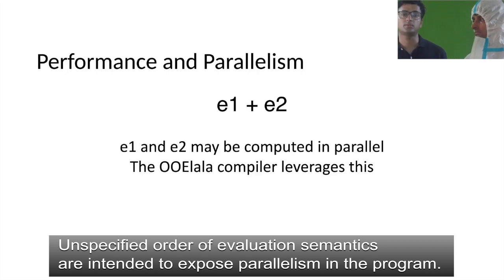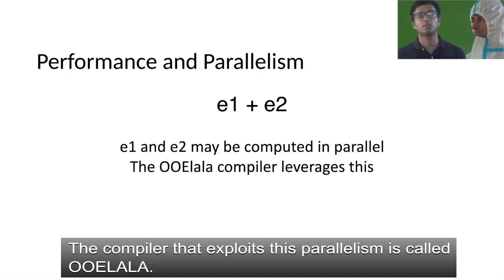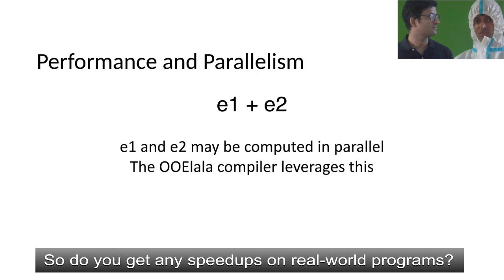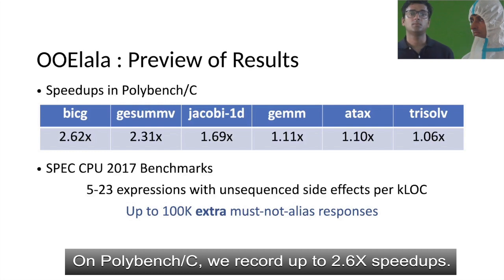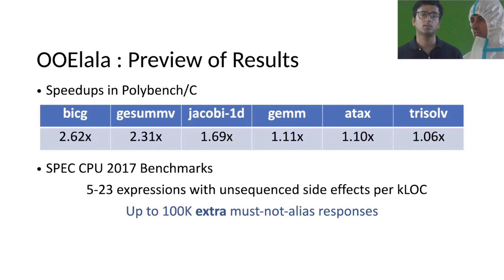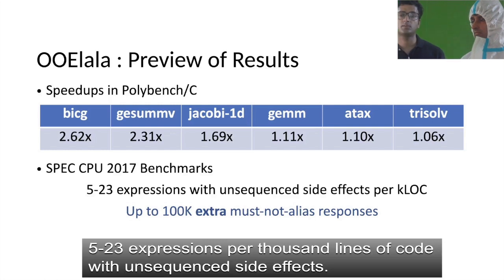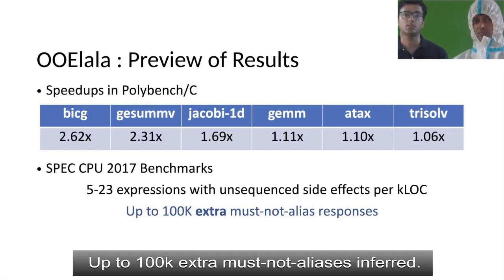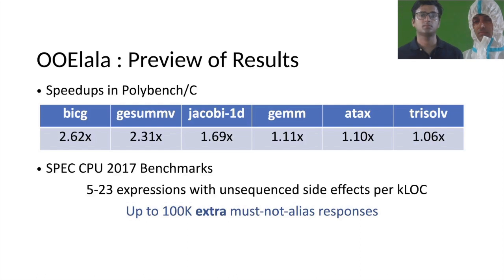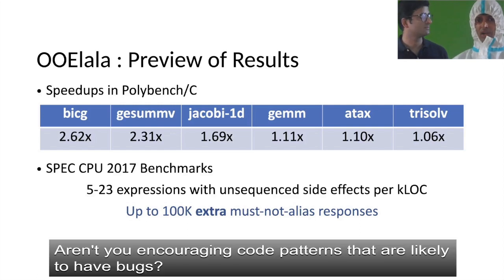These unspecified order-of-evaluation semantics are intended to expose parallelism in the program. The compiler that exploits this parallelism is called OOLALA. On polybench C benchmarks, we record up to 2.6x speedups. On industry-standard SPEC benchmarks, there exist 5 to 23 expressions with unsequenced side effects per 1,000 lines of code, and OOLALA infers up to 100,000 extra must-not-alias relationships in these benchmarks during compilation.